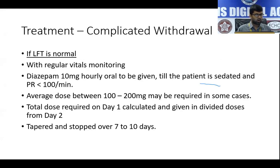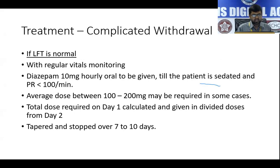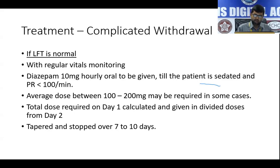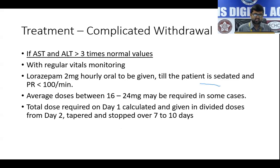In practical settings without ideal resources, where delirium tremens is not complicated by other medical comorbidities and is not resistant to benzodiazepines, alternative protocols can be used. If LFT is normal, with hourly vitals monitoring, give tablet diazepam 10 mg orally until the patient is sedated and pulse is below 100 per minute — an average of 100 to 200 mg may be required on day one. The total day-one dose is then given in divided doses from day two, tapered over 7 to 10 days. If LFT is deranged with AST and ALT more than three times normal, use lorazepam 2 mg hourly; average doses of 16 to 24 mg may be required, tapered similarly.